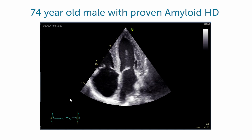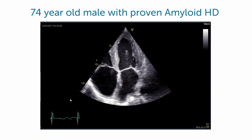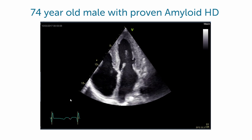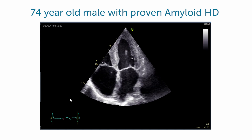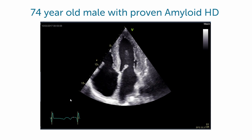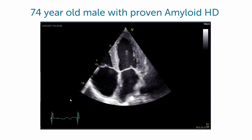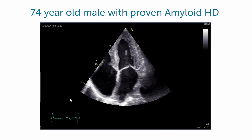Symmetric hypertrophy, a speckled appearance of the myocardium, poor left ventricle function, enlarged atria — this is most likely amyloid heart disease.